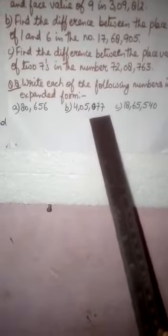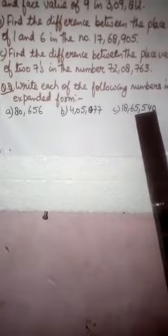Now second is 4,05,077. C is 18,65,540. This is your exercise as well as your worksheet.